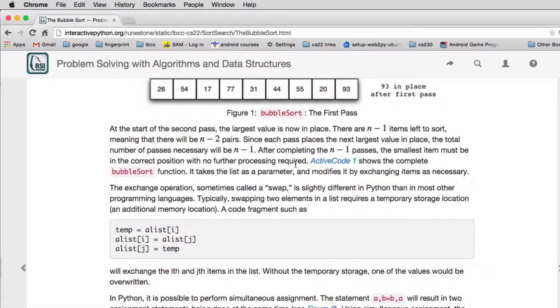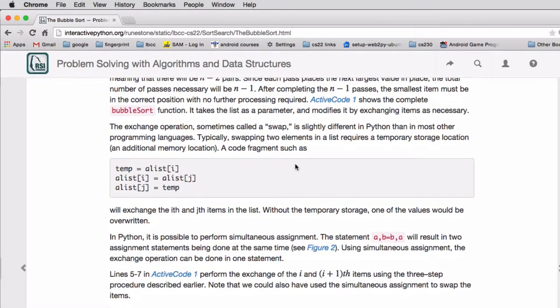Analyzing this, you'll find it's O of n squared. The swap you'd use this code here.